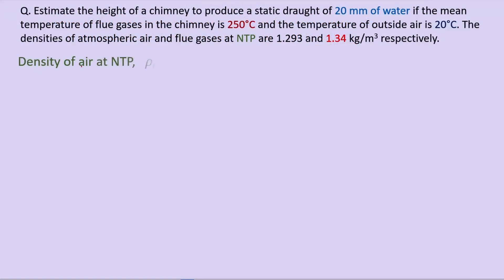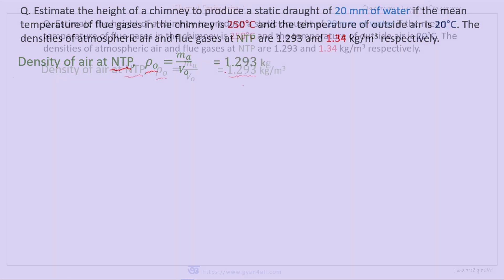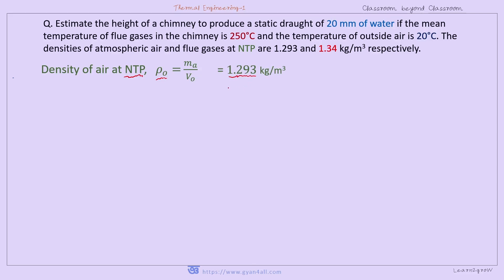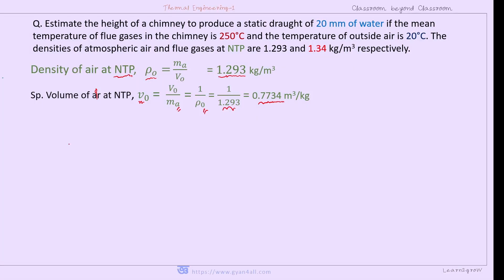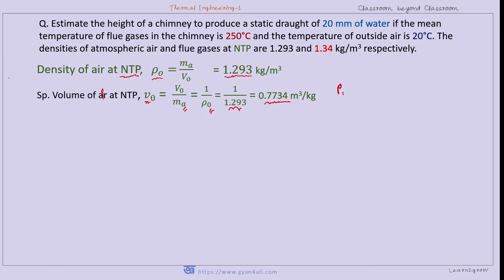The density of air at NTP is ρ₀ equals mass divided by total volume, and this value is given as 1.293 kg/m³. The specific volume of air at NTP, v₀, equals volume divided by mass — mass does not change with temperature, so we write m_A. Specific volume is the reciprocal of density, so v₀ equals 0.7734 m³/kg.